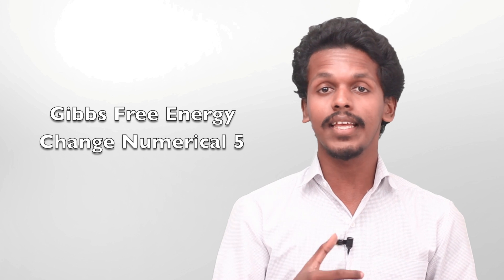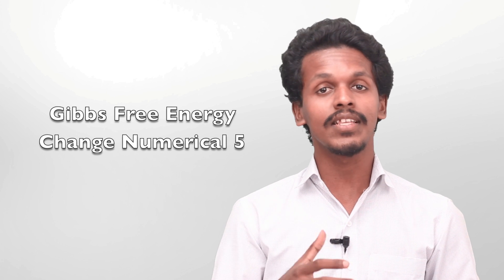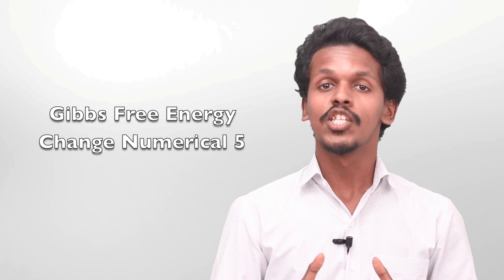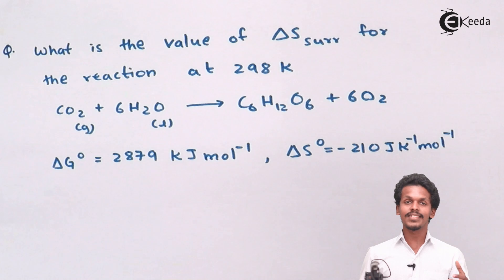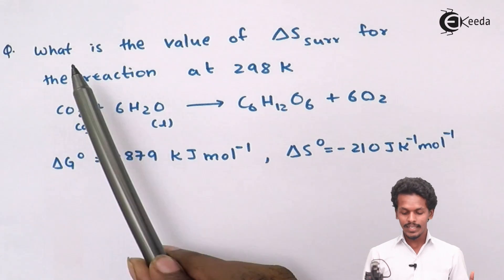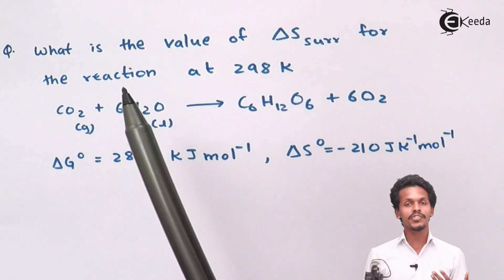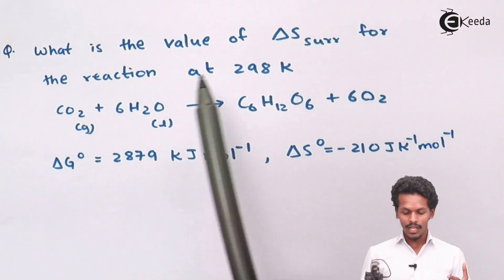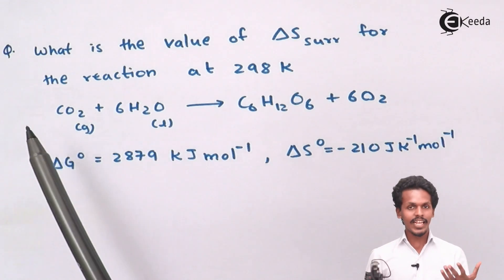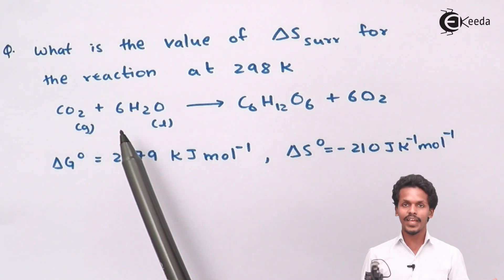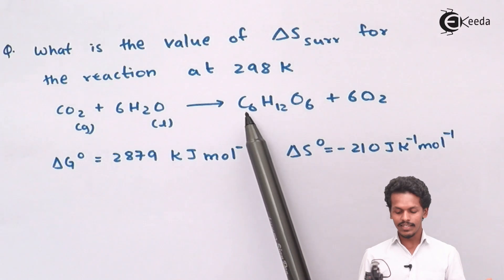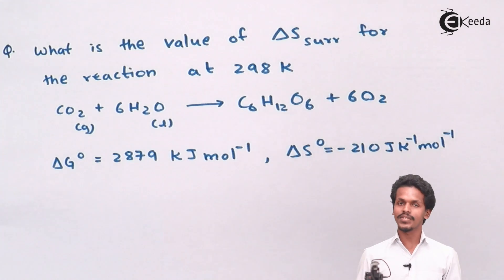Hello friends, now we are going to do another numerical based on different data. We will calculate the standard Gibbs free energy change as well as predict the spontaneity of that particular reaction. The reaction given is 6CO₂ plus 6 moles of H₂O producing C₆H₁₂O₆ plus 6 moles of oxygen — basically photosynthesis — at 298 Kelvin.